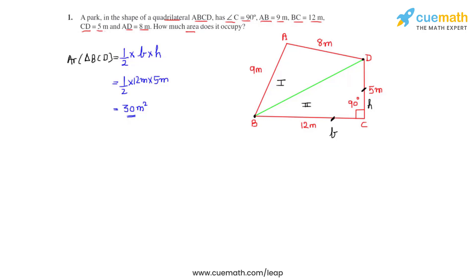Now that we have found the area of triangle BCD, our next step is to find the area of triangle ABD. But for that, we first need to find the length of BD.